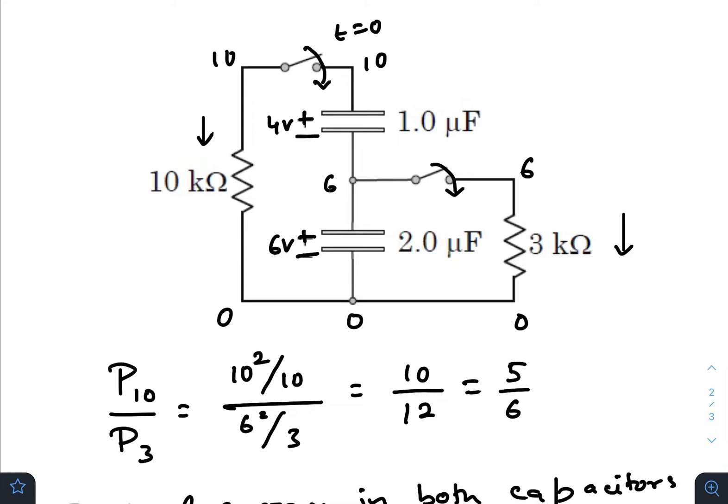So at t equals 0, let us consider that this point is having 0 potential. So this will have 6, and 6 plus 4 will have 10 volts here. So 10 volts here, 0 here. If here it is 6, here it will also be 6.